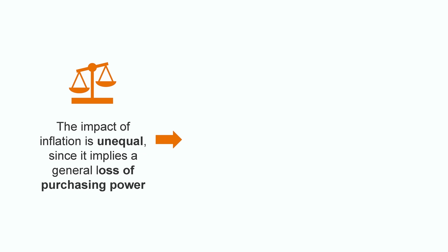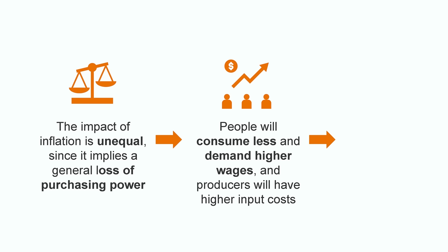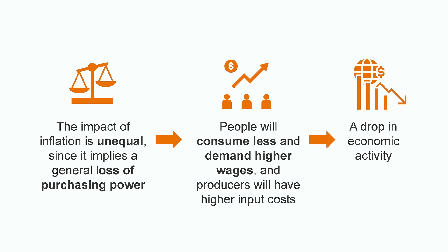A carton of milk costs the same for either a rich person or a poor person. As a consequence, if prices are rising, poorer sectors will have a harder time purchasing the same amount of products since they use a larger proportion of their income. In other words, its impact is unequal since it implies a general loss of purchasing power. People will consume less and demand higher wages in order to keep up with the increasing prices, so producers will have higher input costs. Those higher costs for firms will translate eventually into higher prices. This spiral effect will make it more difficult for workers and consumers to keep up, so consumption will keep decreasing and also investment. This can turn into a recession or drop in economic activity, caused when the loss in consumption and investment generates a fall in the general level of output.